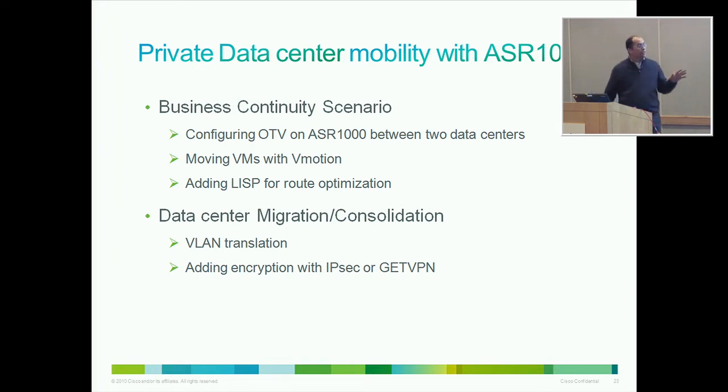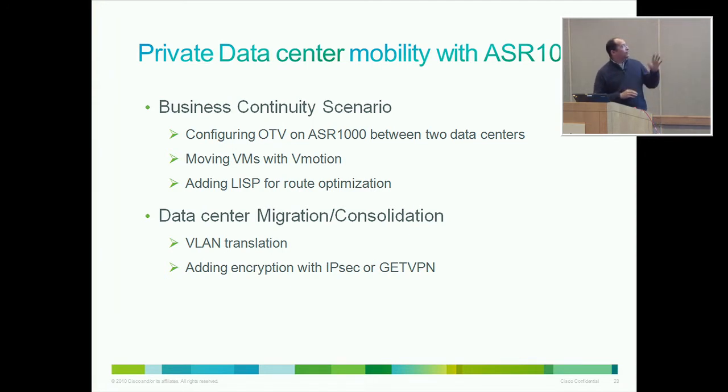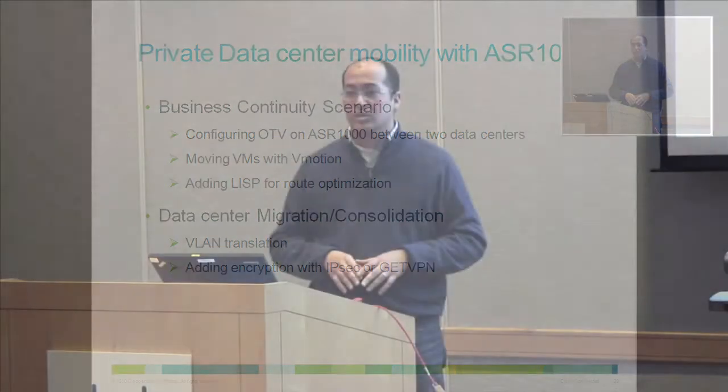On top of OTV, LISP, and switching capabilities with VLAN translation, you can also add IPSec and get VPN. So if you're concerned about layer three encryption and want to make sure the data centers communicate through an encrypted, safe tunnel, you can add IPSec on top of the other technologies on the same box.